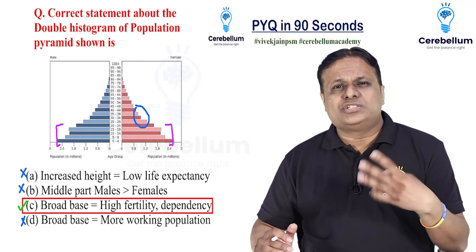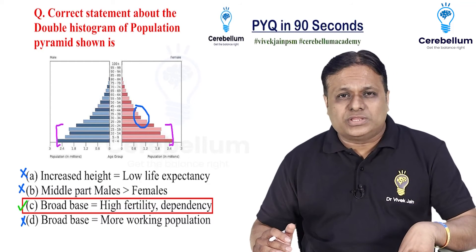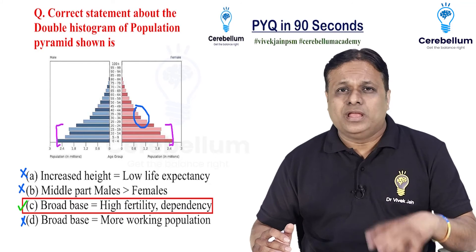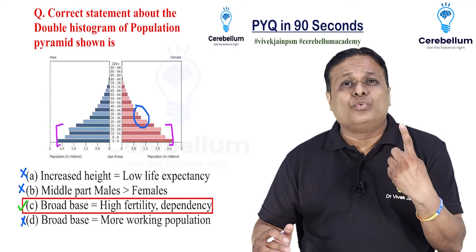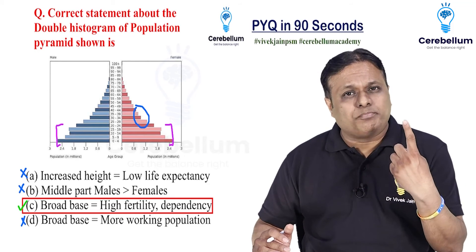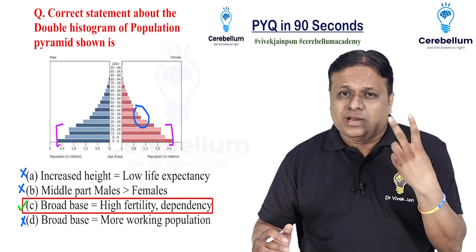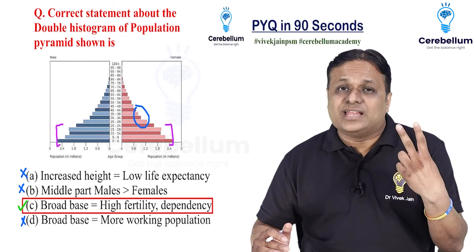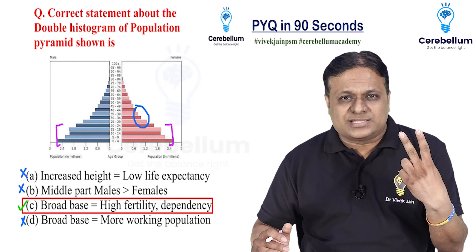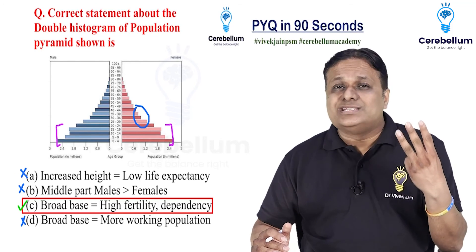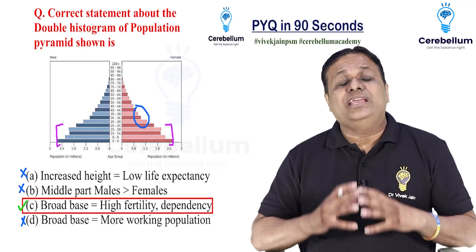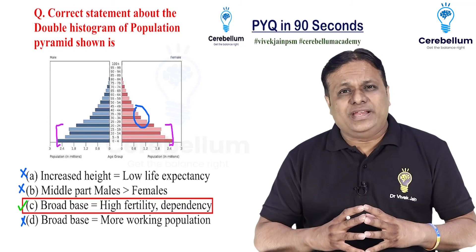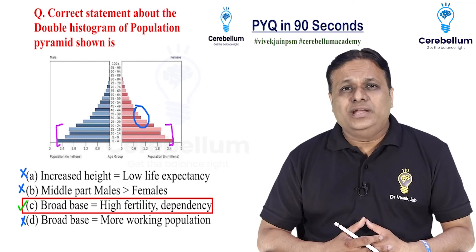Three things you must remember about the population or age-sex pyramid. Number one: shape represents the fertility pattern. Number two: span or height represents life expectancy. Number three: symmetry represents the sex ratio, whether it is favorable or not.